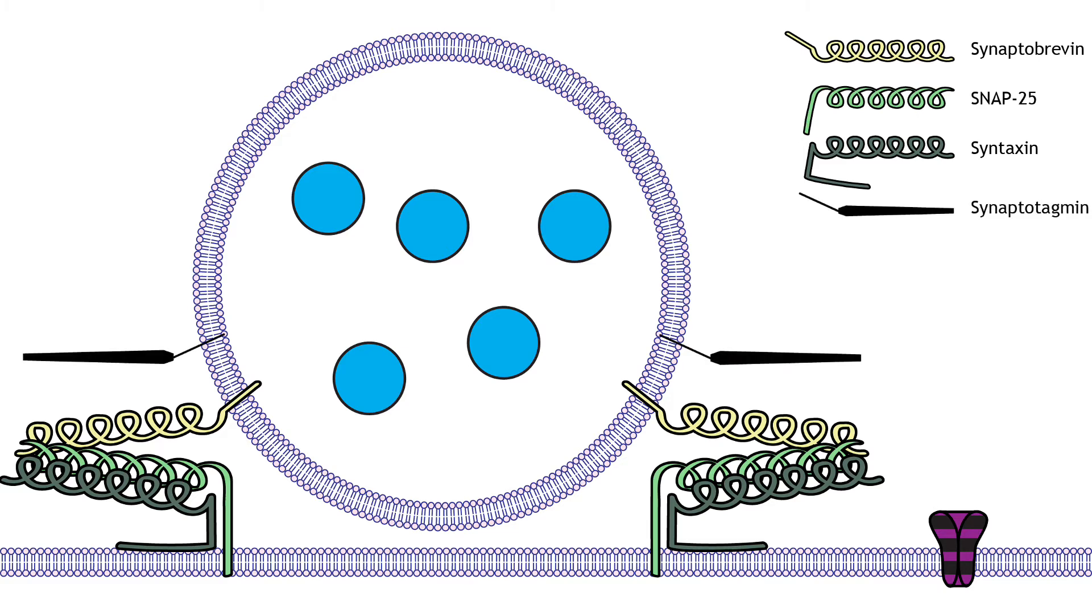The influx of calcium through the voltage-gated calcium channels initiates the exocytosis process that leads to neurotransmitter release. Calcium enters the cell and interacts with another vesicle-bound protein called synaptotagmin. This protein is a calcium sensor.